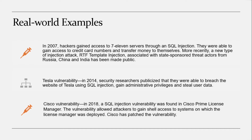In 2017, eBay had a severe XSS vulnerability which allowed attackers to gain full access to seller accounts, allowing them to sell products at a discount and steal payment details. This was used by attackers to drastically reduce prices of high-value products like vehicles. The vulnerability was discovered in 2016; however, attacks continued until 2017.